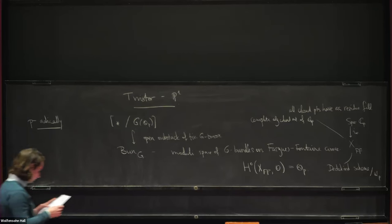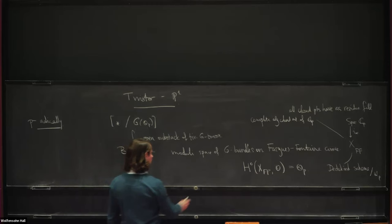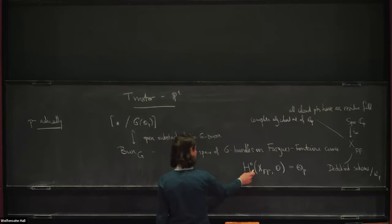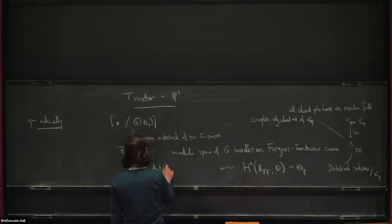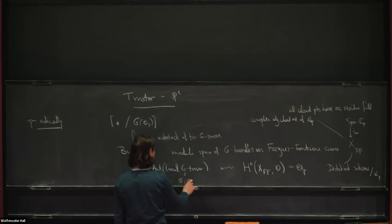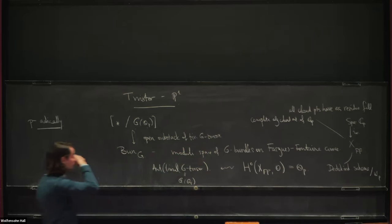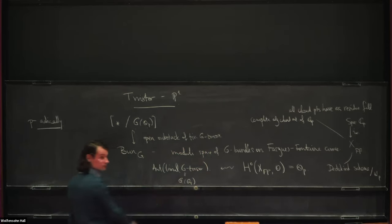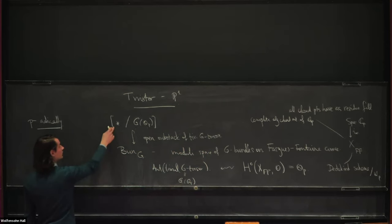In particular this is critical for seeing that the automorphisms of the trivial G-torsor are just G(Q_p). At each point it would be some large group like G(C_p), but the only globally defined ones are G(Q_p), which is behind this being a subspace.